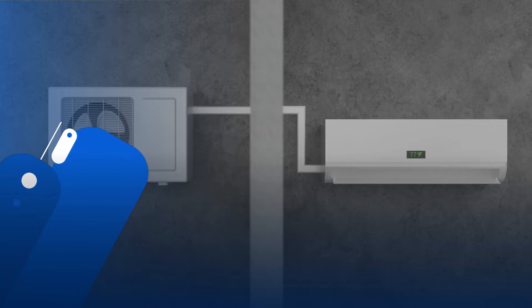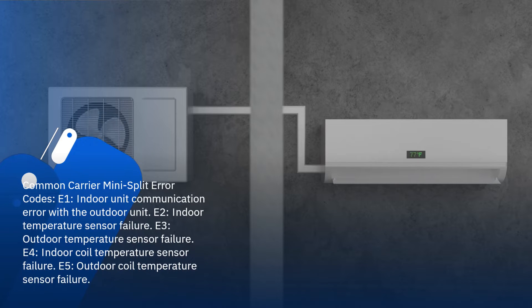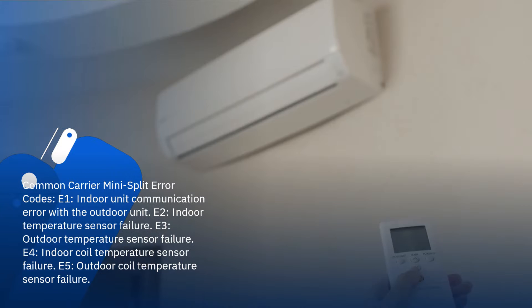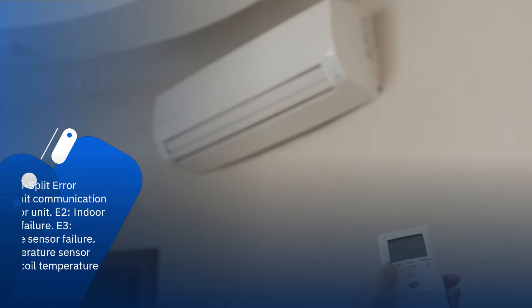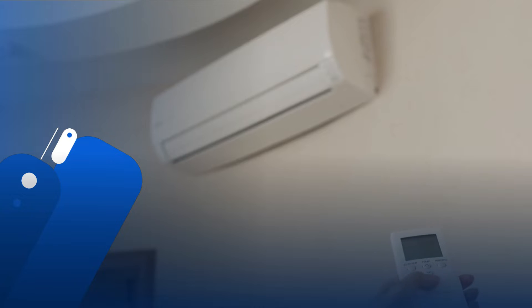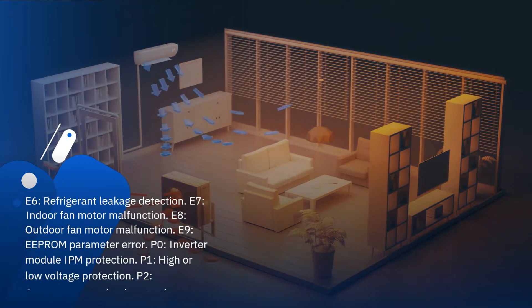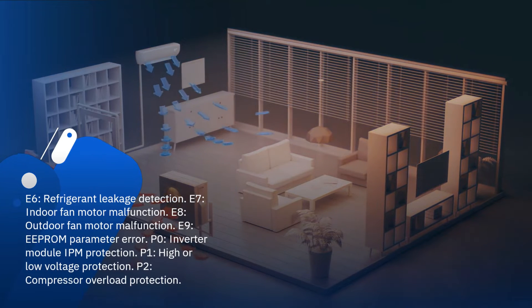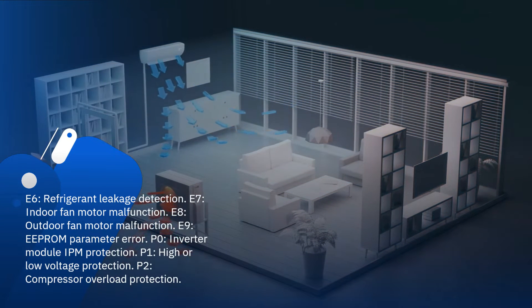Common Carrier Mini-Split Error Codes: E1 — Indoor Unit Communication Error with the Outdoor Unit; E2 — Indoor Temperature Sensor Failure; E3 — Outdoor Temperature Sensor Failure; E4 — Indoor Coil Temperature Sensor Failure; E5 — Outdoor Coil Temperature Sensor Failure; E6 — Refrigerant Leakage Detection; E7 — Indoor Fan Motor Malfunction; E8 — Outdoor Fan Motor Malfunction.